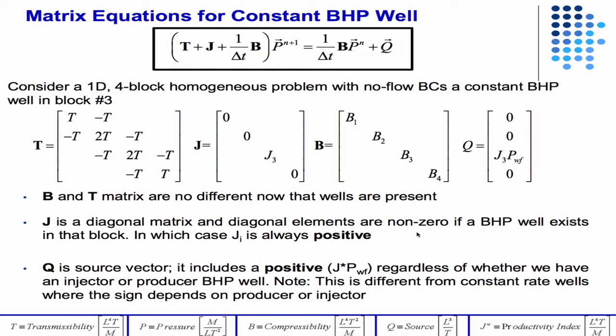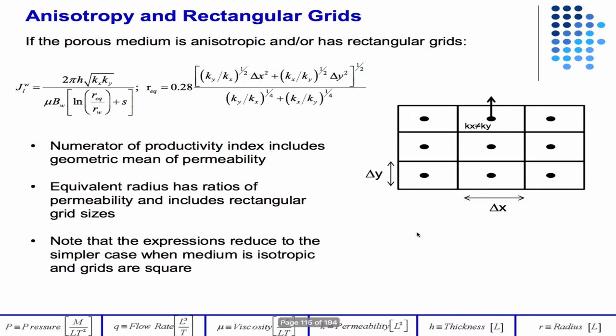And of course we went through all these derivations by hand. We didn't do this, but this is the extension to varying grid block sizes, and delta X and delta Y, also anisotropic permeability. So you see there's a KX, KY, and delta X, delta Y in those equations, and that is now your REQ, and therefore, other than that, it's just a small extension.